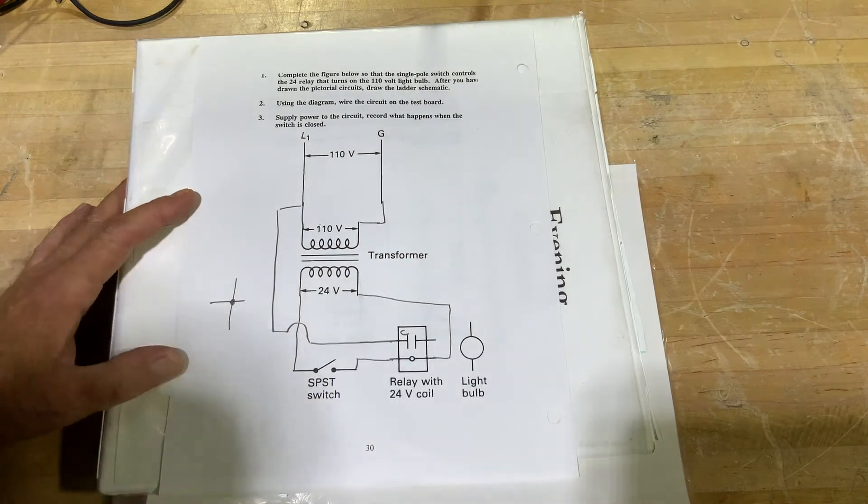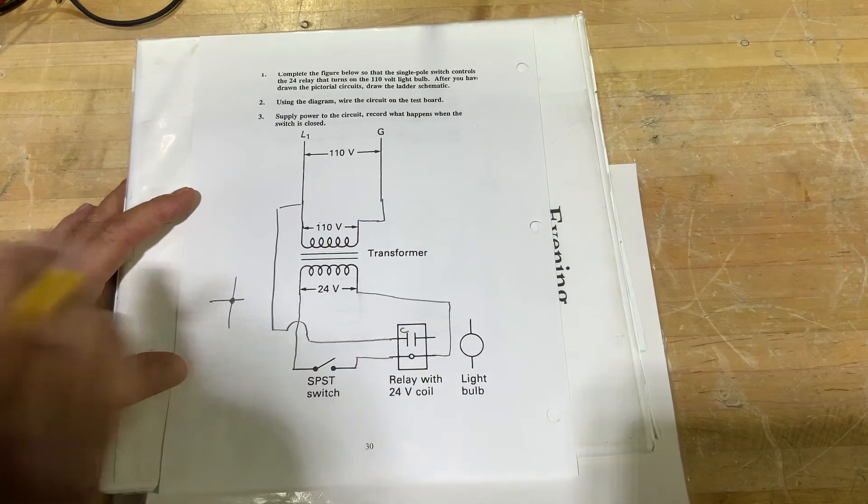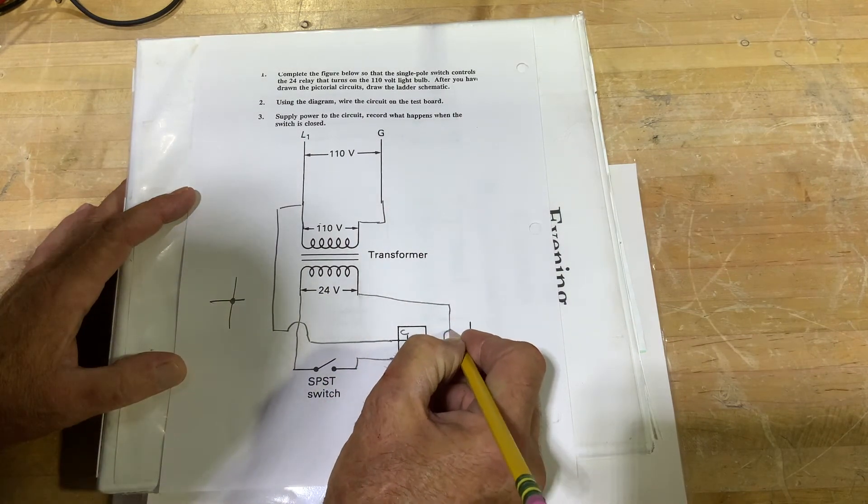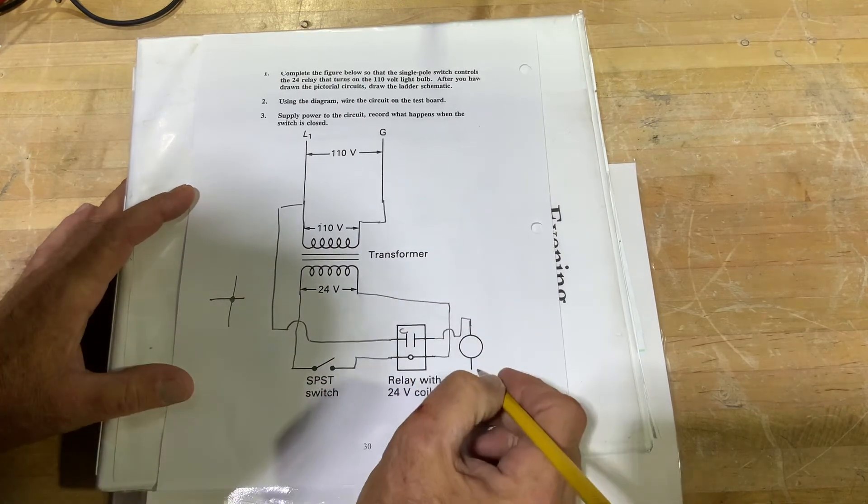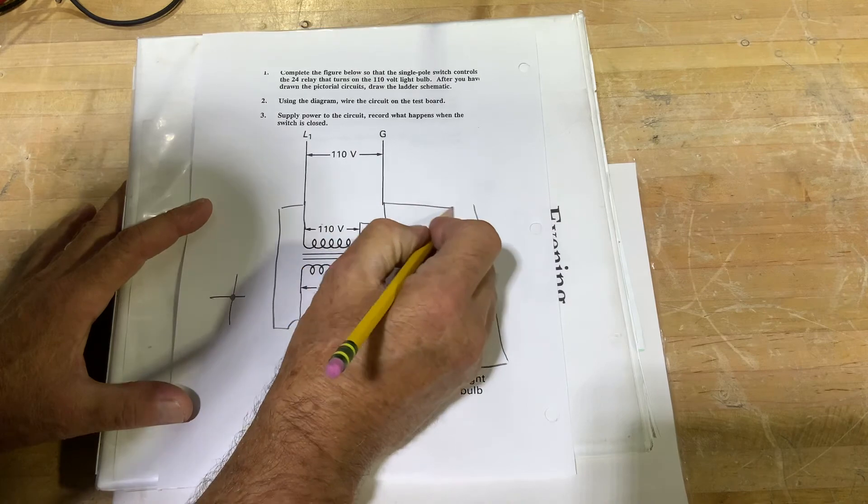We got it going to our inlet. This would be our C on our relay board for common power. This is a normally open switch. We're going to come out of that switch, going to jump over this wire into our light bulb, out of our light bulb back home.